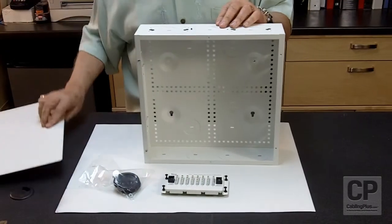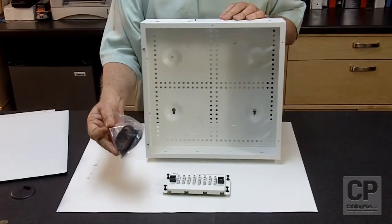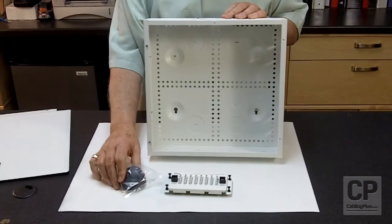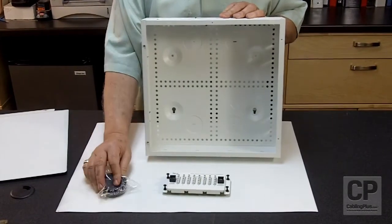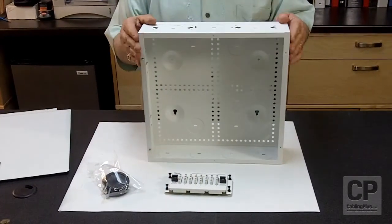Also, the panel comes with all the hardware. Grommets to protect your wiring and all the screws to mount it to the wall and the screws to mount the door onto the box itself once it's complete.